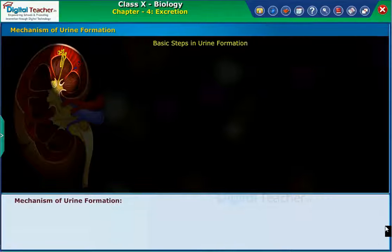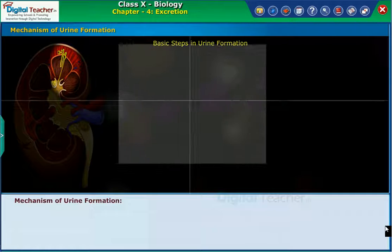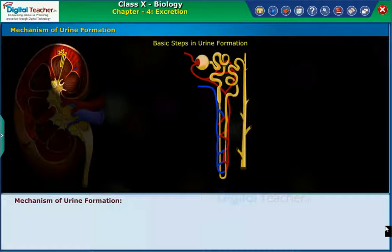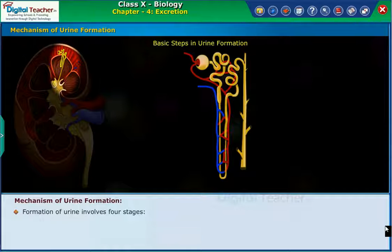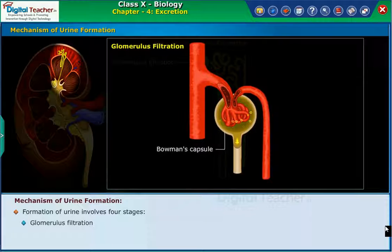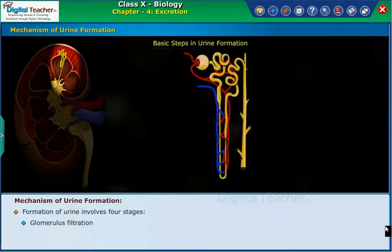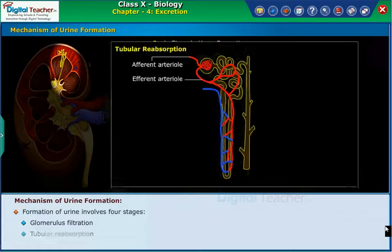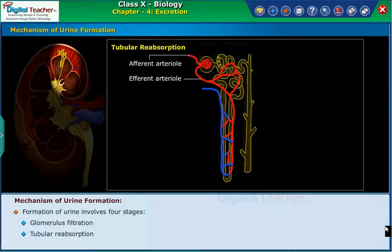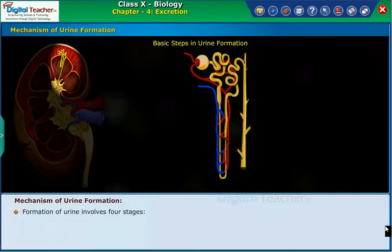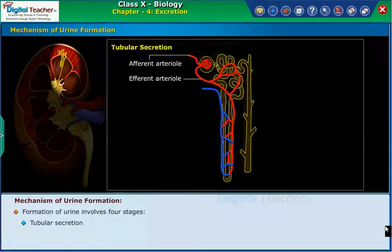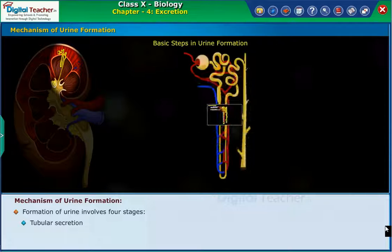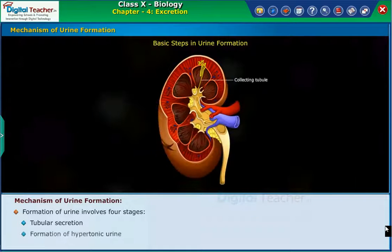Now, let us study the mechanism involved in urine formation. Formation of urine involves four stages: glomerular filtration, tubular reabsorption, tubular secretion, and formation of hypertonic urine.